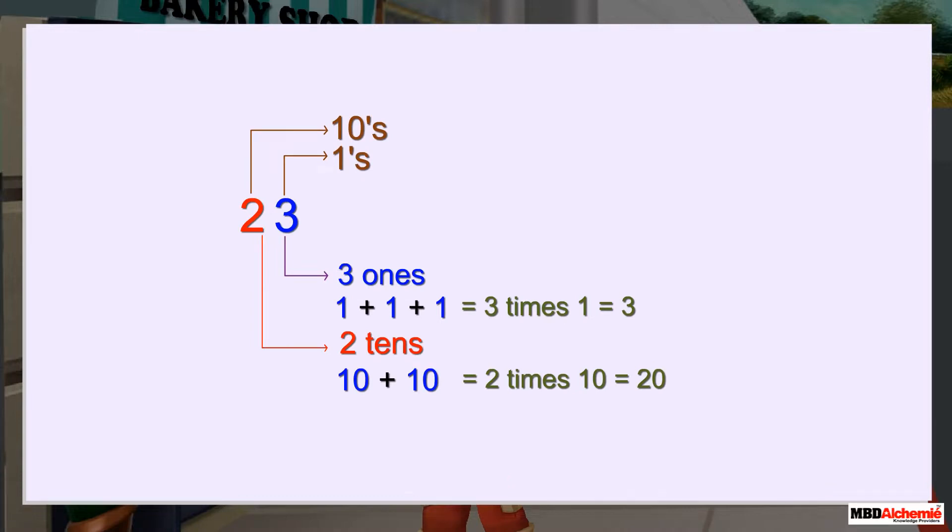So, we can write twenty-three as the sum of twenty and three. So, you can consider this as expanded form of the number twenty-three.